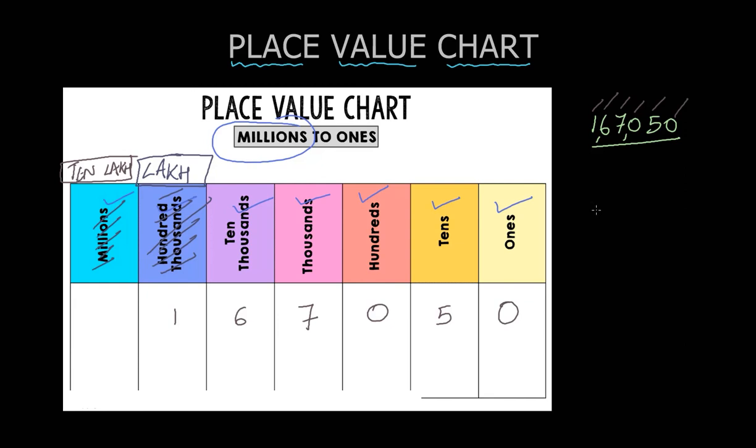Suppose I am going to start with a number called 21 lakh 67,000 and 50. I have added one more digit in front of lakh. So it becomes ten lakh. Ten lakh, that means 21 lakh 67,000 and 50. The same number but I have just added one more number in front of this.